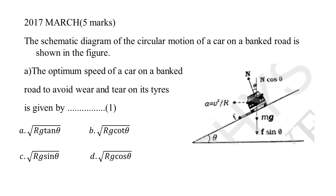The schematic diagram of circular motion of a car on a banked road is shown. The optimum speed of a car on a banked road to avoid wear and tear of its tyres is given by the formula: V = √(Rg tan θ). This is the maximum velocity formula.